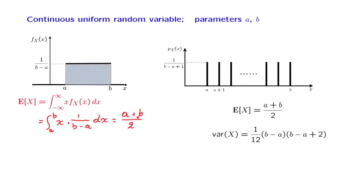In fact, we could find this answer without running this integration. We could just recognize that this PDF is symmetric around the midpoint of the interval, and the midpoint is a plus b over 2.